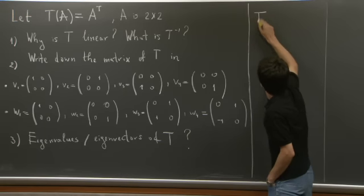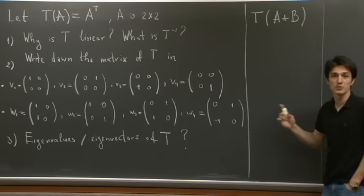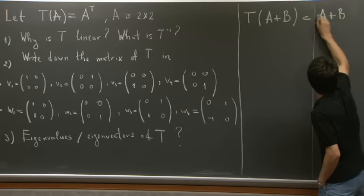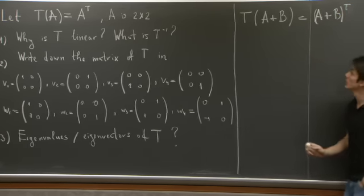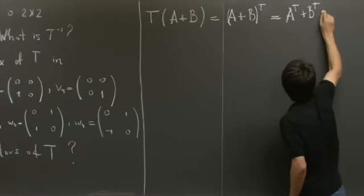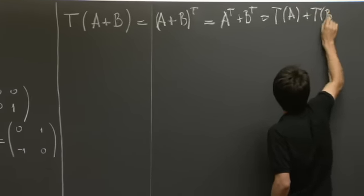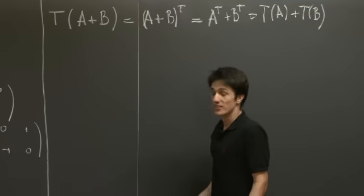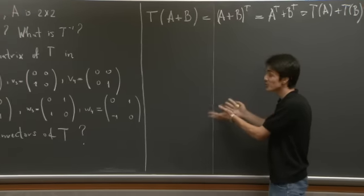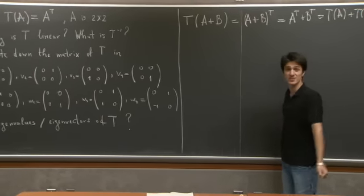Well, what happens when T acts on the sum of two matrices, A and B? So it produces the matrix, the transpose of A plus B. But we know that this is A transpose plus B transpose. And so this is exactly T(A) plus T(B). So the transformation that we're analyzing takes the sum of two matrices into the sum of their transformations.